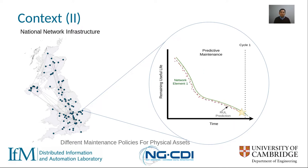Finally, we can also use information about the condition of the asset and its environment to predict when the asset is going to fail. We collect data and make a prediction of when the asset will eventually fail, then trigger a maintenance plan based on those predictions. In this presentation we mainly talk about the first two strategies; the predictive strategy is something discussed in another video where we integrate with an AI/ML platform.